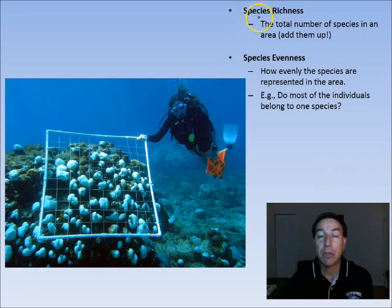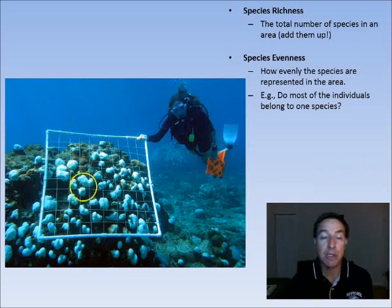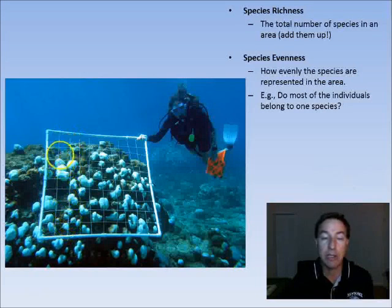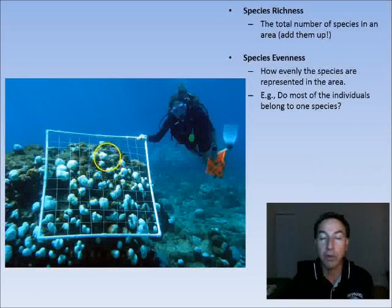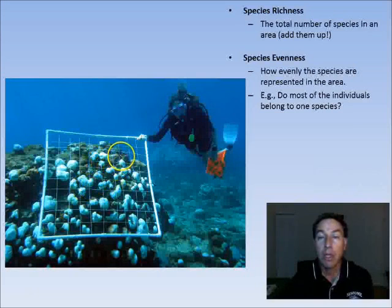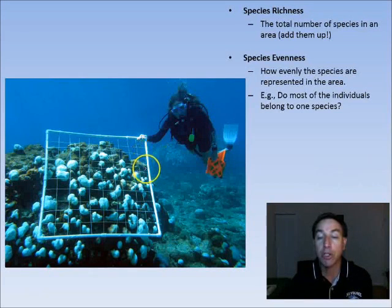One of the things I mentioned earlier is species richness. Species richness is the total number of species in the area. We have a quadrat here, and in order to make counting easy, they divided this quadrat into, it looks like decimeters actually. So there's one, two, three, there should be about ten each way, so those are probably decimeters. They're counting the coral colonies within each quadrat using those decimeters to help them narrow down the area. That's species richness. Then you can also measure species evenness, how evenly species are represented in the area. Do most of the individuals belong to just one species?